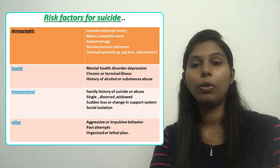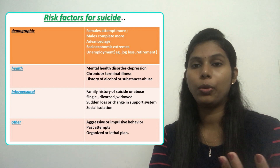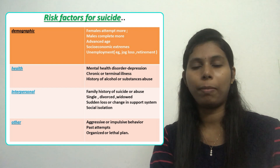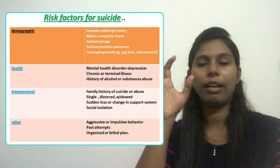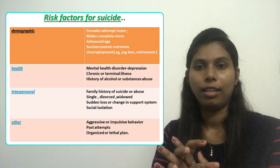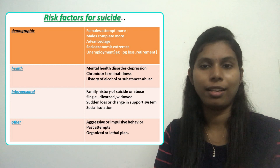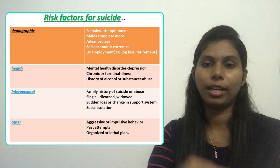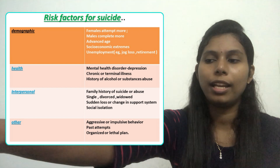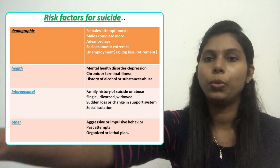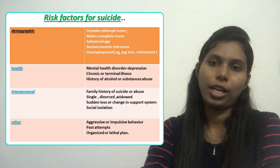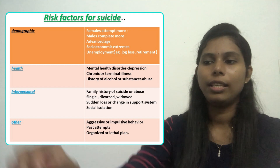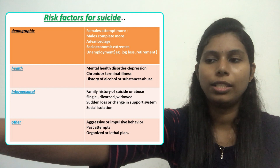The fourth group is miscellaneous factors, including aggressive or impulsive behaviors, previous past suicide attempts, and having an organized or lethal plan. Some clients have a very organized plan — for example, having access to a firearm — indicating high severity. These are the main risk factors for suicide, especially in clients with mental health illness.